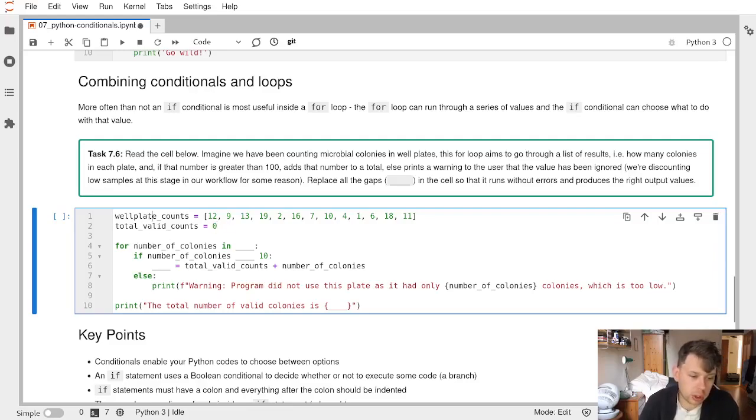Then we're going to go through each of the well plate counts in turn using our for loop. So for each number of colonies—12, then 9, then 13, and so on—inside well plate counts, we're going to do everything that's inside the loop, as indicated by the indentation.